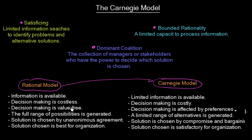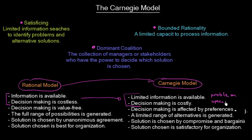Under the rational model, all information was available and decision making was costless. However, under the Carnegie model, there is limited information available and decision making is costly. We cannot know everything about the world. When you are searching for information as a manager — about a particular supplier or a manufacturing problem — you are going to search for problem-specific information, not something irrelevant like a weather forecast. Decision making is therefore limited to problem-specific characteristics.